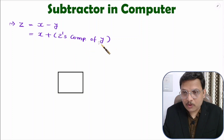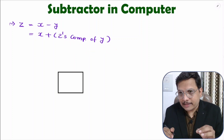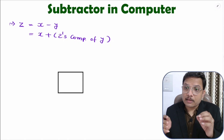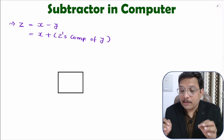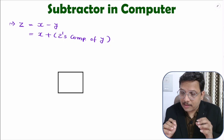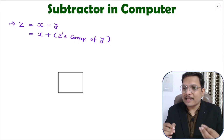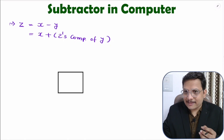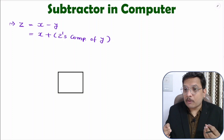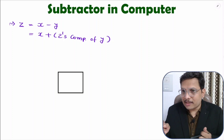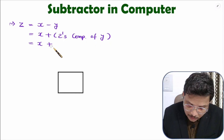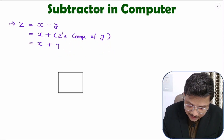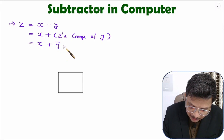Now, how do we get two's complement? Two's complement means one's complement plus one — remember this. Two's complement means one's complement plus one. One's complement is the inversion of that data. One's complement of x is x-bar, and one's complement of y is y-bar. So two's complement of y is y-bar plus one.